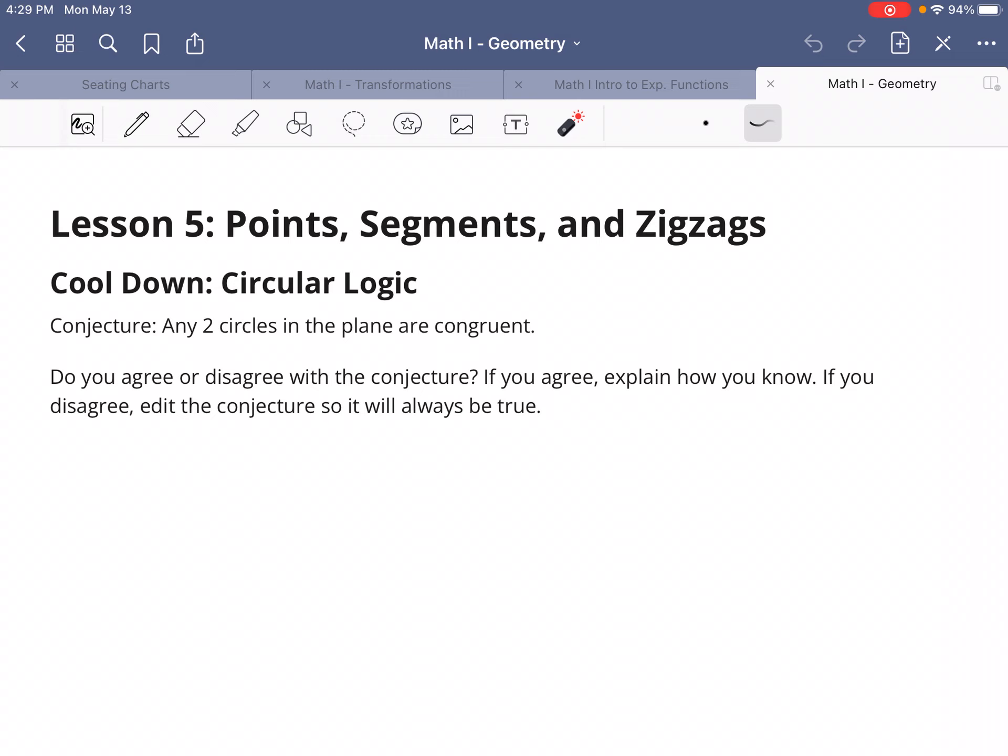If that conjecture is not always true, what could you add to it? How could you prove that two circles in a plane are, in fact, congruent to one another? Let me know if you have any questions.